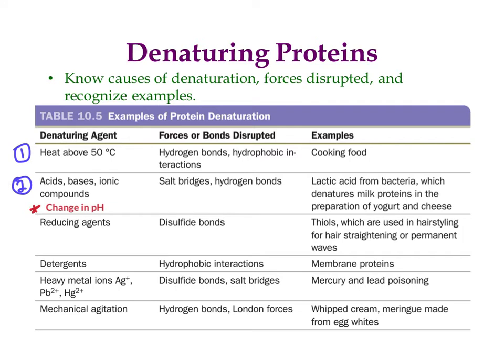The third way that you can denature a protein is by adding some sort of reducing agent. This is actually done intentionally whenever you get a perm or when you have your hair chemically straightened. How many people get perms these days? Probably not as many. Back in the 80s, people used to get them all the time — it was a very distinctive look, so you should probably Google 'perm from the 80s.' It's pretty fun.